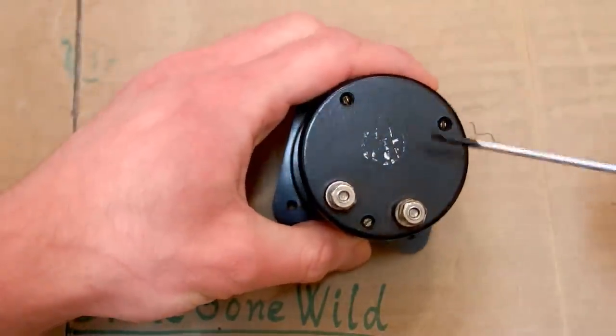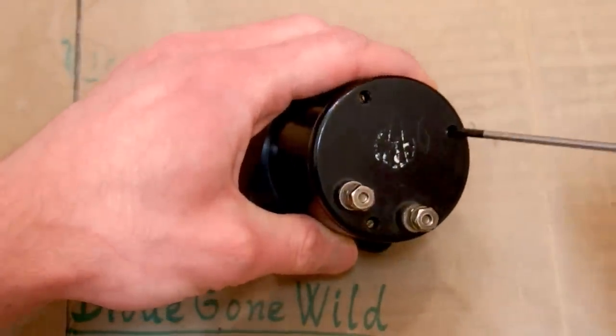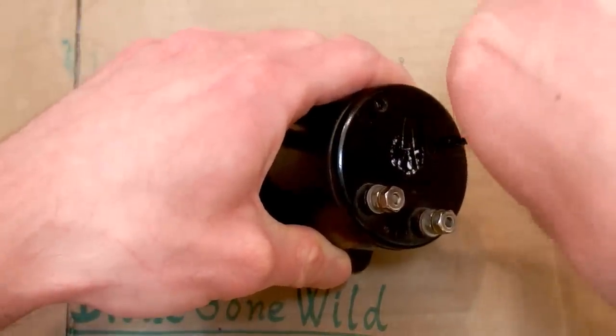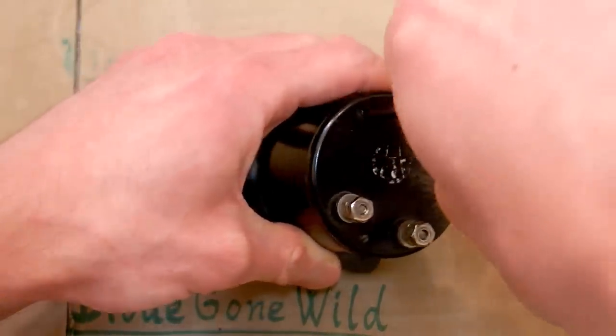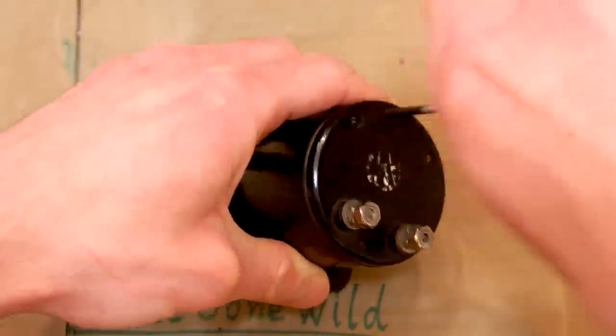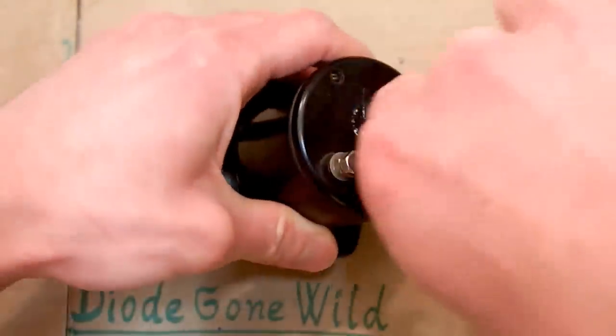There are three screws for a flat screwdriver because almost all Soviet devices have flat screwdriver screws in them. So let's open it and my cat is going to help me of course, as usually.